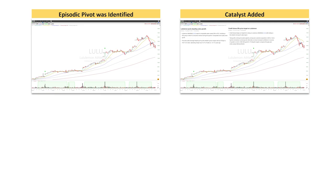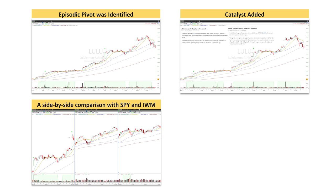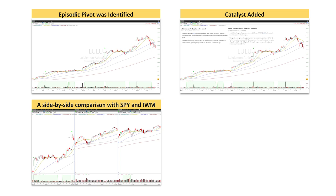Before looking into those questions, I would like to share a bit of information on the data that was used in this study. Initially, the episodic pivot was identified, then the catalyst was added, then a side-by-side comparison was done — IVM — to look into the correlation. And the last layer of data is the 5-minute chart using historical data from eSignal, which was a very useful resource for this particular intraday analysis.